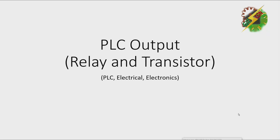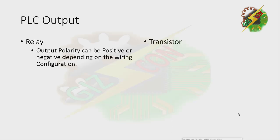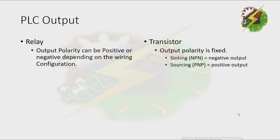Hello everyone, this is Andrew. Now we're going to discuss the two types of output of PLC: relay and transistor. First, we need to define relay output and transistor output. For relay, the output polarity can be positive or negative depending on the wiring configuration. For transistor, the output polarity is fixed — sinking or NPN has a negative output, while sourcing or PNP has a positive output.